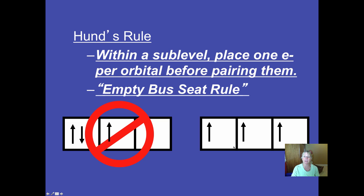Electrons go in one at a time, all spinning in the same direction. And then if there were more than three electrons, you place another electron here with a down arrow. You can't have a full orbital, a half full, and this is what we call the empty bus seat rule.